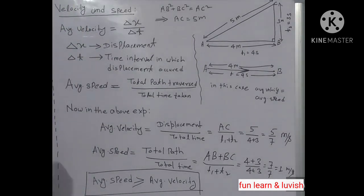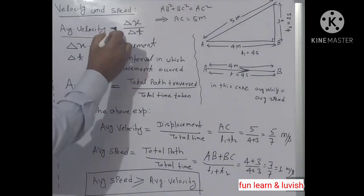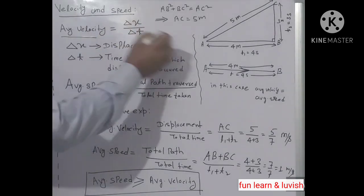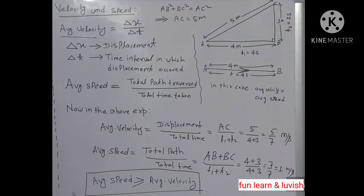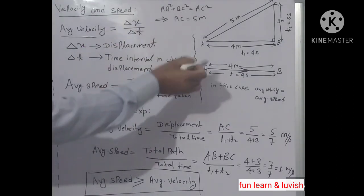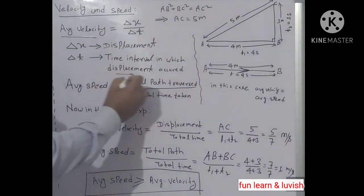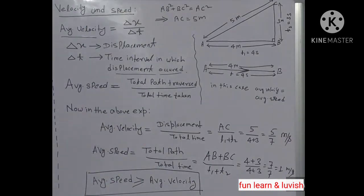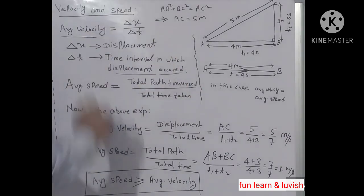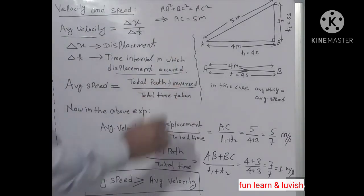What is average velocity? Average velocity is total displacement upon total time — the time interval in which the displacement occurred. What is average speed? Average speed is total path traversed upon total time.